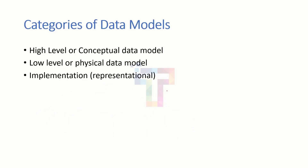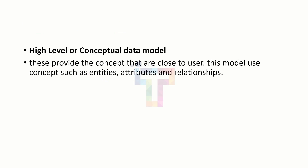Next, we have the categories of data model. We have different categories: high level or conceptual data model, low level or physical data model, or the third one is implementation or representational data model. One by one, we will see what these models are. The first one is high level or conceptual data model. So, what is conceptual data model? Both high level and conceptual are the same.